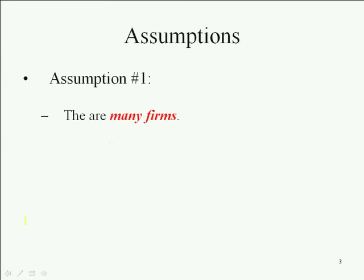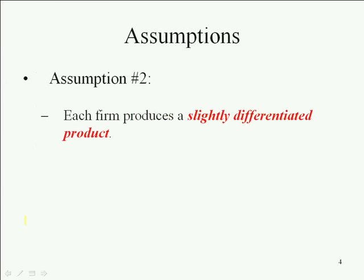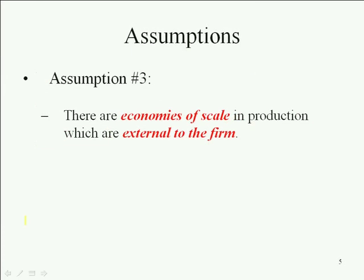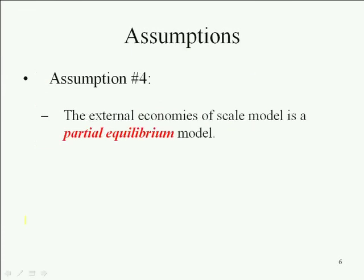So we want to set this up as an industry having many firms — notice right away we have a difference with monopolistic competition. The number of firms here is generally much larger than what we see in a monopolistically competitive industry. We're still going to have slightly differentiated products, and we've got close substitutes. We're going to assume economies of scale external to the firm, as described. This is a partial equilibrium analysis, so we're only looking at this industry — not where the resources come from or the effect on production of other goods and services.